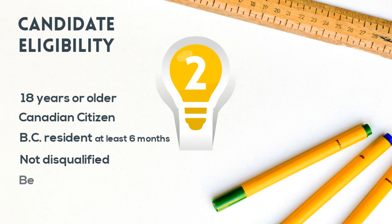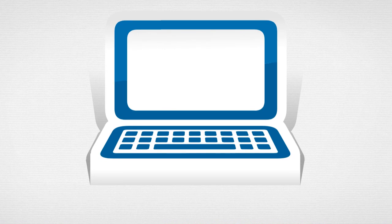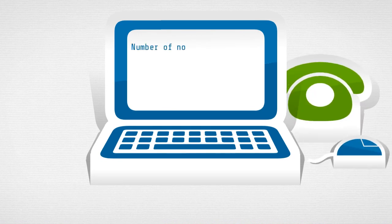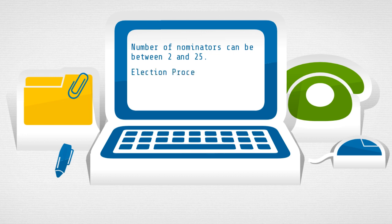Candidates must also be nominated by eligible electors from the jurisdiction in which they want to run. The minimum number of nominators required is two, but local governments can require up to 25 depending on their population size through their election procedure bylaw.